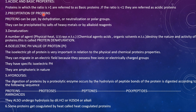Coming to the precipitation of proteins, proteins can be precipitated by dehydration — that means removal of water — or by neutralization of polar groups. They can also be precipitated by salts of heavy metals or by alkaloid reagents. By using these methods, we can precipitate the proteins.